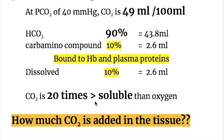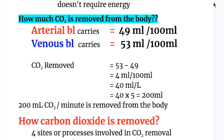Carbon dioxide is 20 times more soluble than oxygen. How much carbon dioxide is removed from the body? Arterial blood carries 49 ml and venous blood carries 53 ml of carbon dioxide per 100 ml, giving a difference of 4 ml per 100 ml. This equals 40 ml per litre, and with 5 litres of blood, that makes 200 ml of carbon dioxide removed per minute.